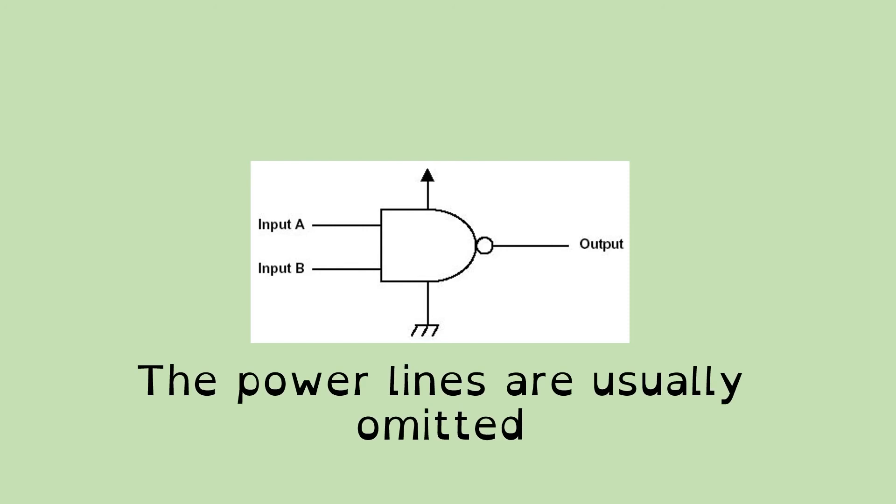And in fact, generally, we tend to omit the power lines. In fact, almost always, we take those power lines away because every single gate's going to have them. So we can assume them. And so it looks like this.